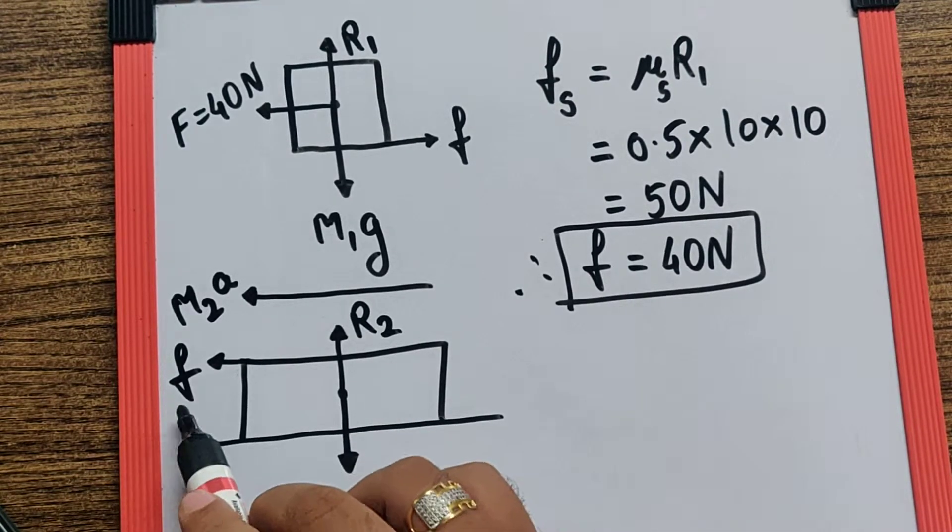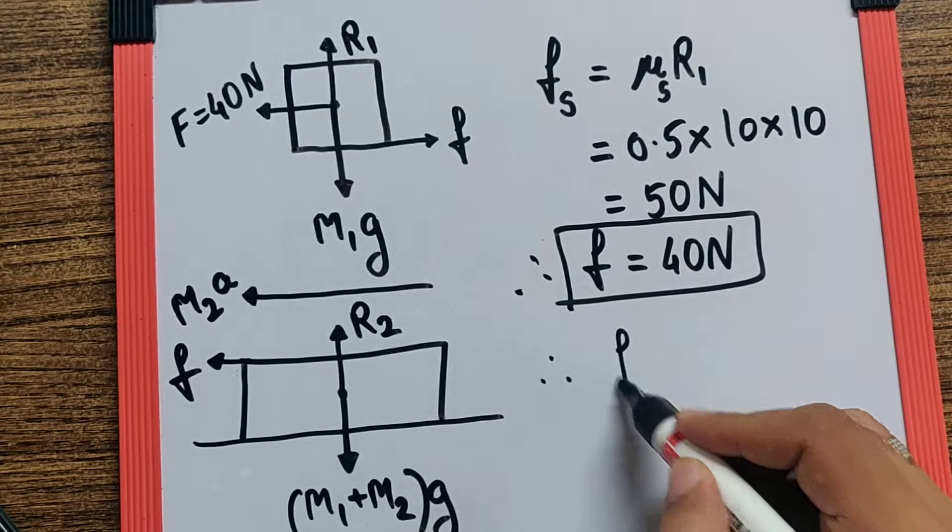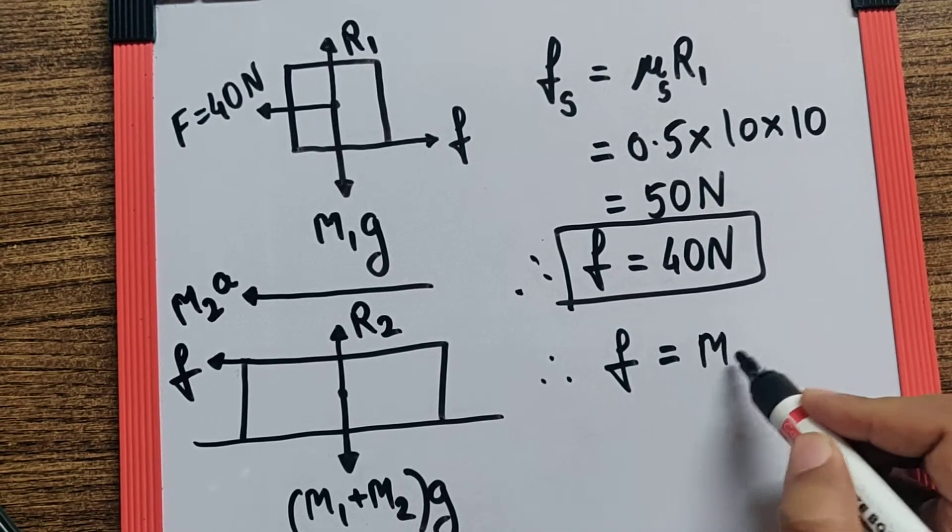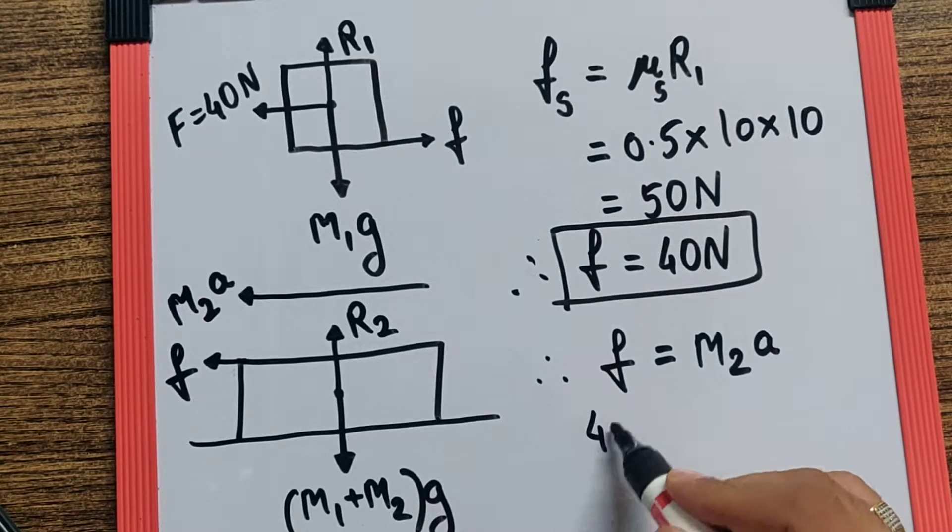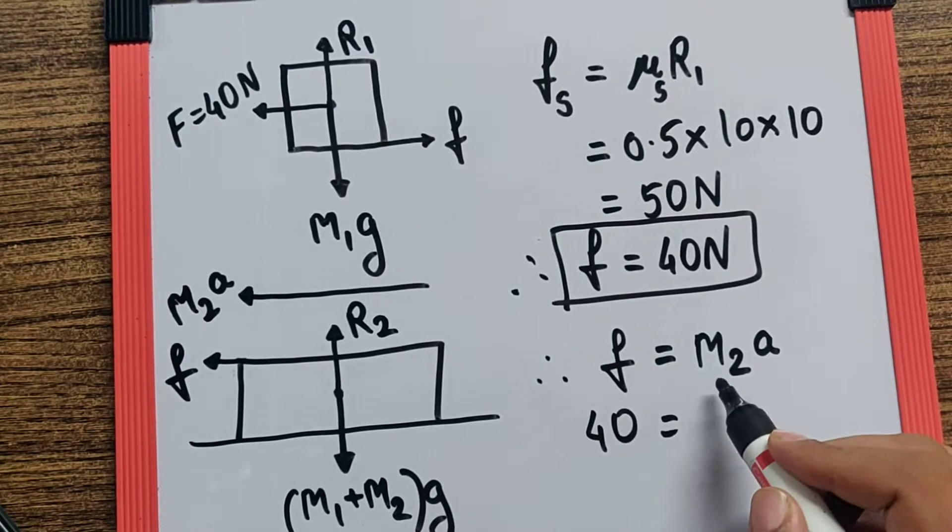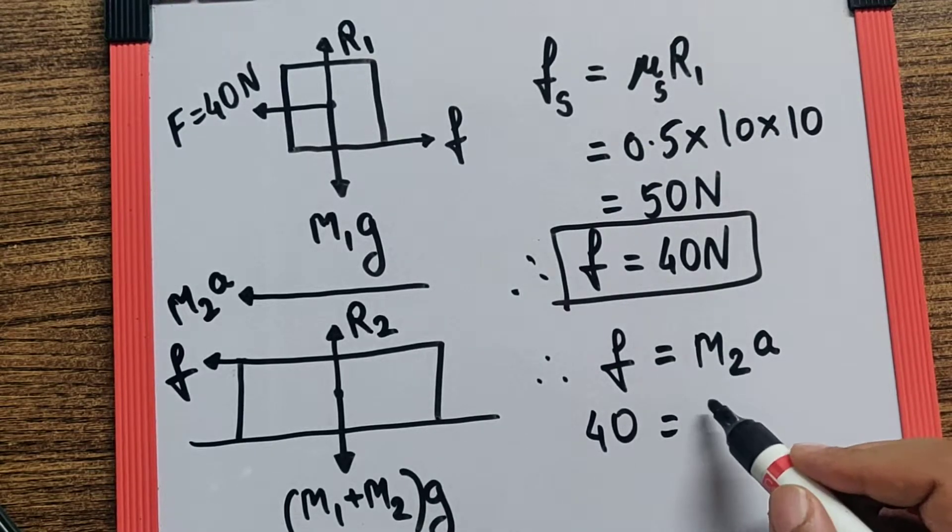And therefore I can say the friction itself is M2a. Now the friction we have already calculated as 40, the M2 is given as 30 kg,